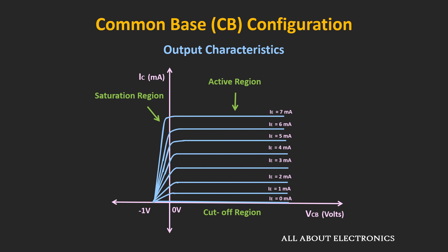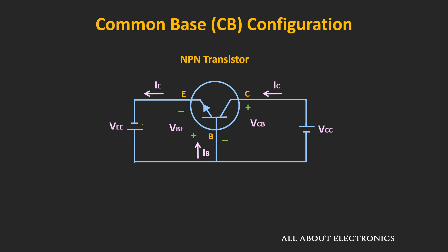The third region is the cut-off region. Whenever the emitter current is zero — that is, when we remove the voltage between the emitter and the base terminal — the collector current IC will also be almost equal to zero. Under this condition, the only collector current that exists is due to minority charge carriers, or in other words, it is only due to the reverse saturation current.